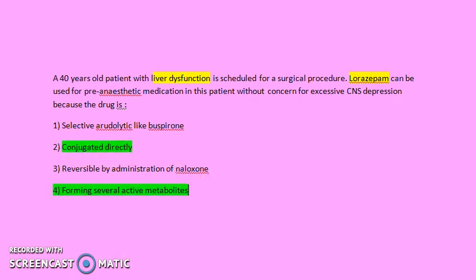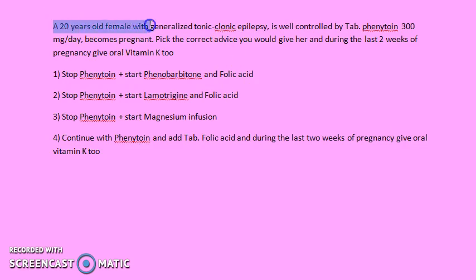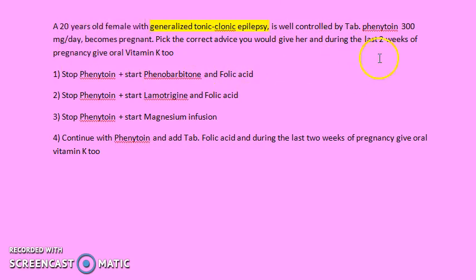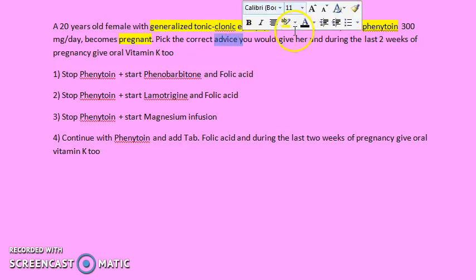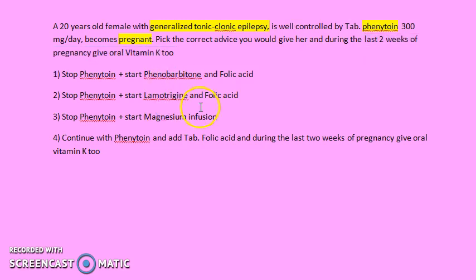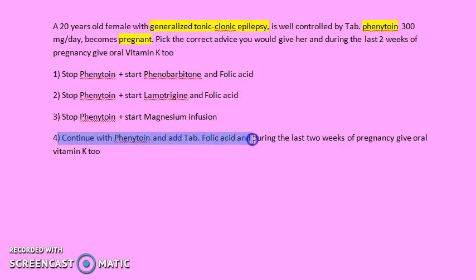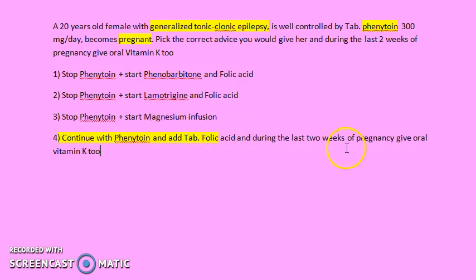Third question: a 20-year-old female with generalized tonic-clonic epilepsy, well controlled on phenytoin 300 mg per day, becomes pregnant. The advice is to continue phenytoin and add folic acid. Additionally, in the last two weeks of pregnancy, give vitamin K. So continue phenytoin, add folic acid throughout, and add vitamin K in the final two weeks.